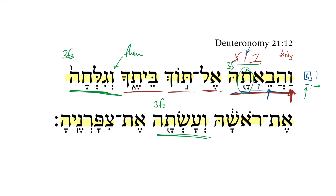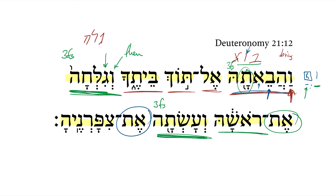Then she shall shave — direct object marker — her head. This verb is a piel perfect, third feminine singular of the verbal root galah. She shall shave her head. And she shall do — direct object marker — her nails.